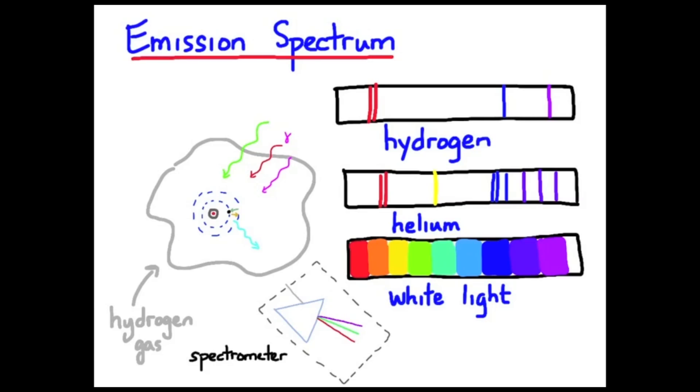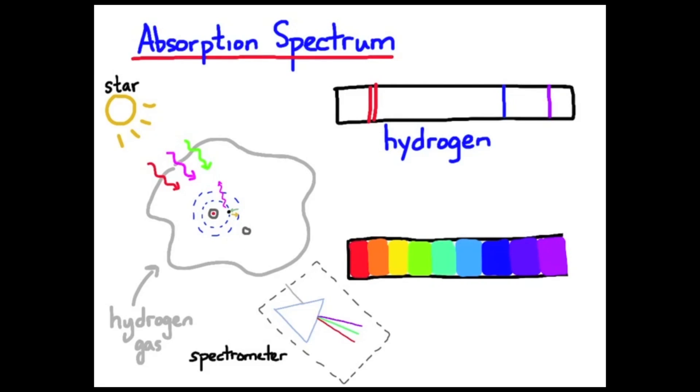Now, if the light that was exciting that hydrogen gas was coming from behind the gas relative to where we are, we have what's called an absorption spectrum. Those electrons that are being excited and then de-exciting and giving off photons,